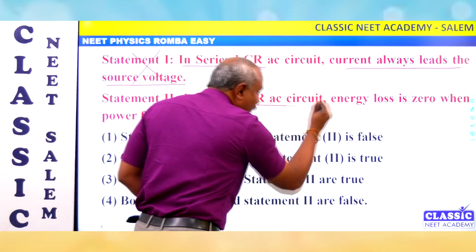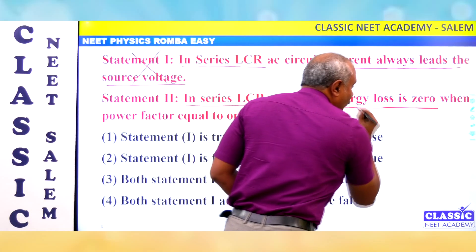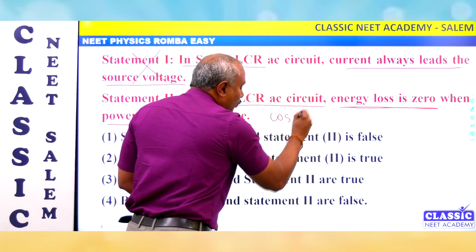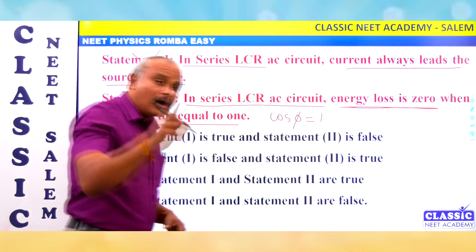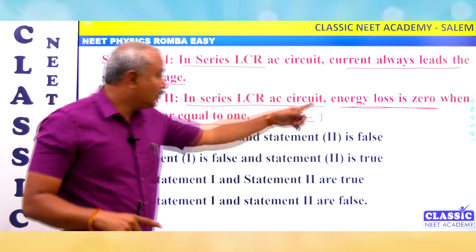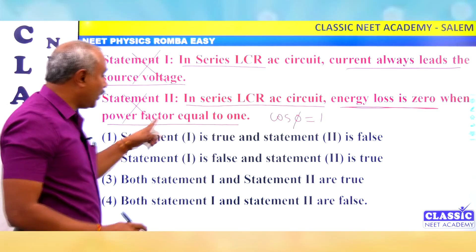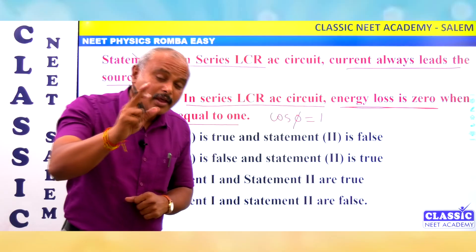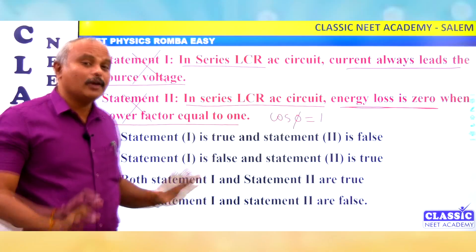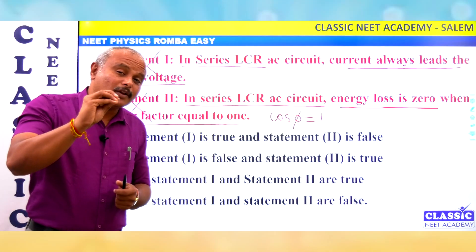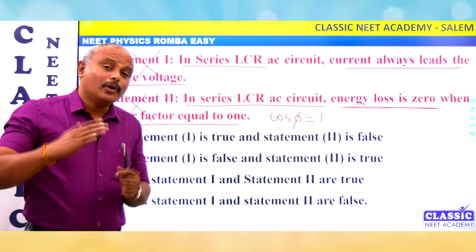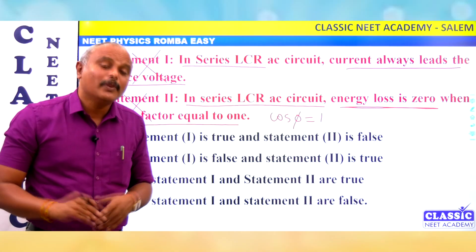Let's see: in a series LCR AC circuit, energy loss is zero when power factor equals 1, and cos φ equals 1. But because there is resistance, you actually have energy loss maximum when power factor is 1. So that statement is incorrect — when power factor is 1, power dissipation is maximum and energy loss is maximum.